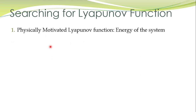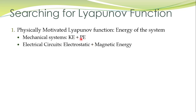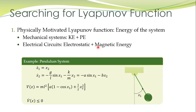We start with the first one: physically motivated Lyapunov functions. The basic motivation of Lyapunov theory was from the energy of the system. Therefore, energy of a system can be taken as a candidate Lyapunov function. For mechanical systems, total energy is the sum of kinetic energy and potential energy; likewise, in electrical systems, it is the sum of electrostatic energy and magnetic energy. We had already studied one example of the pendulum system, where we took the energy of the system as a candidate Lyapunov function and then determined the stability of the equilibrium point.